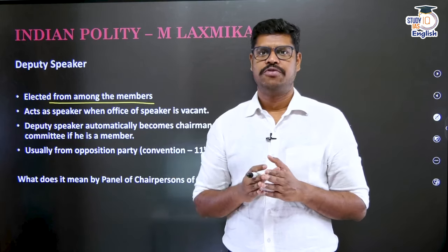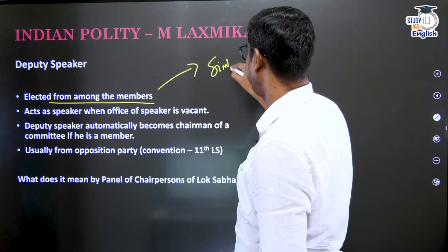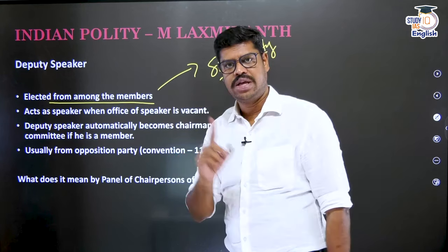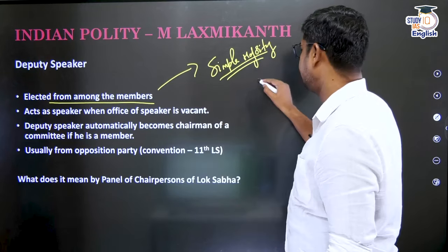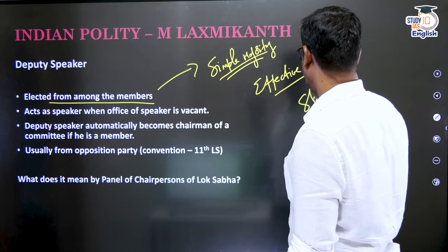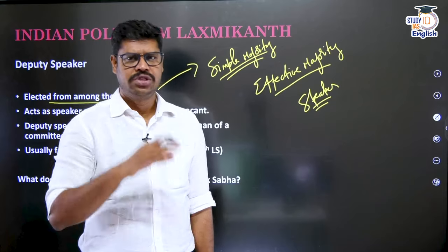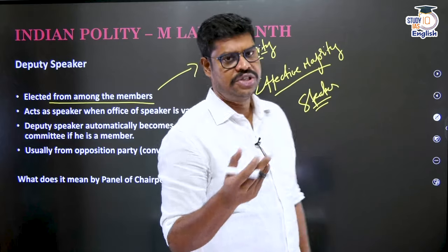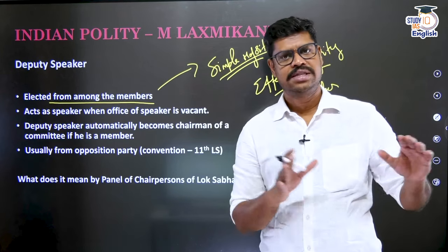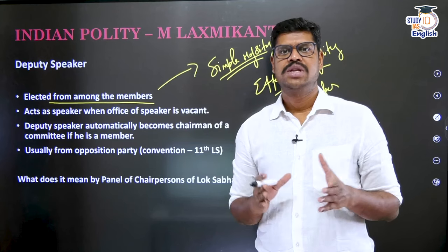Once elected, the Deputy Speaker serves for the term of the House. The Deputy Speaker is also elected by simple majority. He can be disqualified on the same grounds as other members of parliament, and can be removed from office by a resolution passed by effective majority. He can also resign at any time by submitting his resignation to the Speaker. As long as the Speaker is present, the Deputy Speaker functions as just another member of parliament.